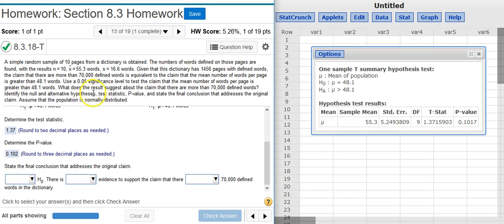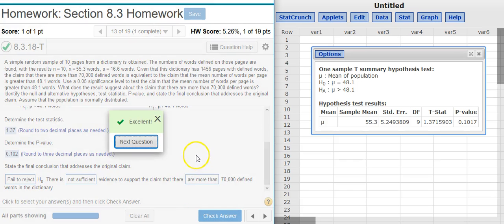Here we've got a p-value of just over 10%, well above 5%, so we're outside the region of rejection. When you're outside the region of rejection, you fail to reject the null hypothesis. Every time you fail to reject, there is not sufficient evidence. And here our original claim was that there was more than 70,000 defined words. Excellent.